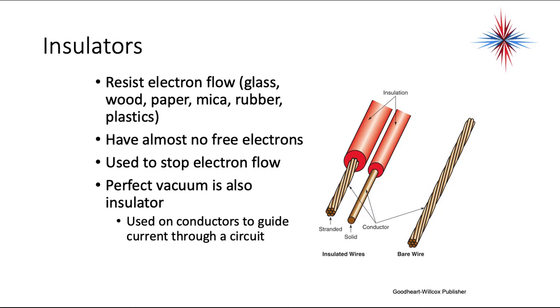Insulators resist electron flow. They could be glass, wood, paper, mica, rubber, or plastics. They almost have no free electrons. They're used to stop electron flow. The perfect vacuum is also an insulator. It's used on conductors to guide current through a circuit. So again, we have insulated wire and bare wire. We have stranded, we have solid. The insulation is around the wire on the insulated wires and not around it on the bare wire. Bare wire you'll usually only find in an equipment ground.